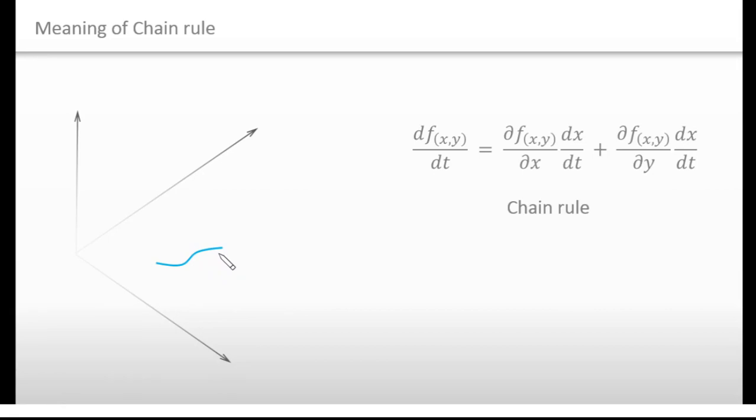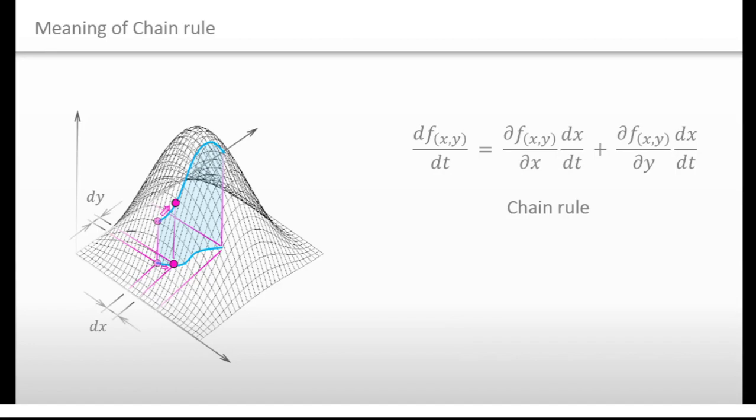This curve is defined by a parameter t. Unlike the case of total differential, dx and dy are connected with each other. I mean, the relation between dx and dy are determined by the curve. So, if the parameter t moves a little, you will move on the mountain along this curve. And, this is the amount of how much you go up.